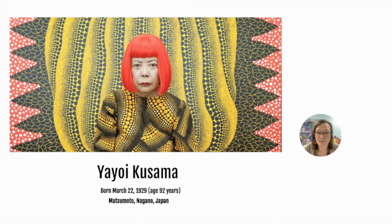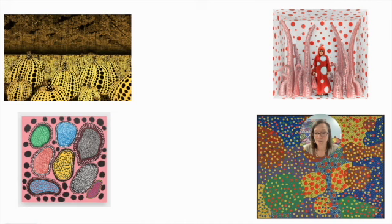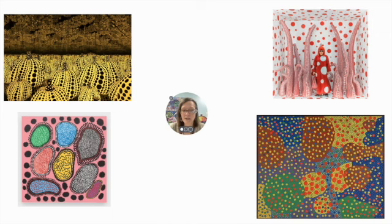So you can see this is a photograph of her standing in front of one of her paintings and look at all of the different patterns that she used in these different shapes. So she was born a long time ago in 1929, which means that she is 92 years old now. And I'm going to show you some more of her paintings. Can you see all of the dots? She's definitely very inspired by dots.